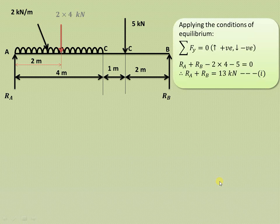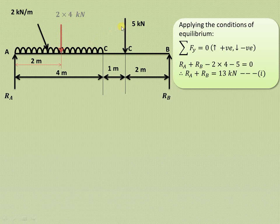We now apply the conditions of equilibrium. The first condition is that the summation of forces in the y-direction equals zero. Assuming upward forces are positive and downward forces are negative: RA acts upward, RB acts upward, the UDL load of 2 × 4 kN acts downward, and the 5 kN point load acts downward. So RA plus RB equals 13 kN.